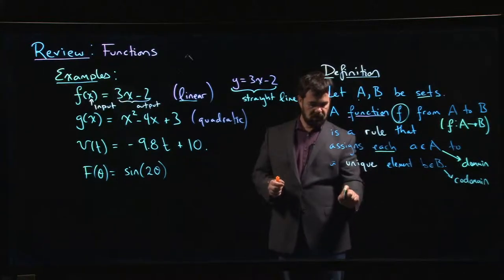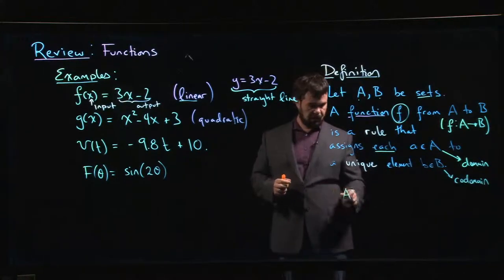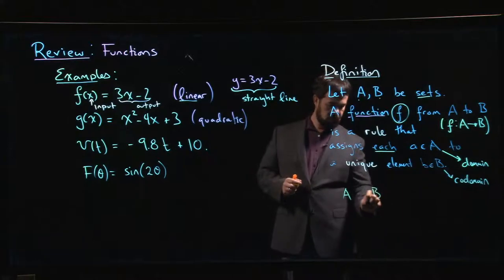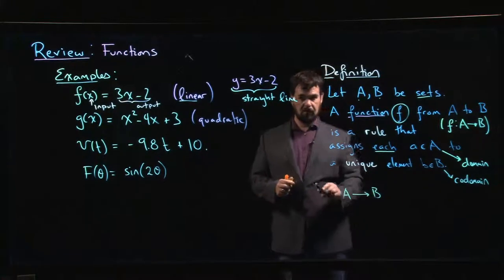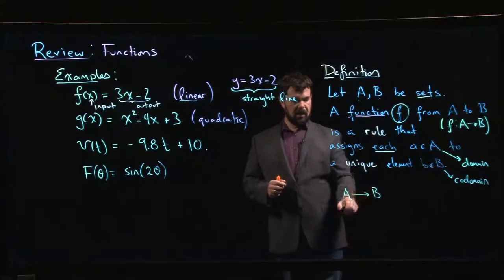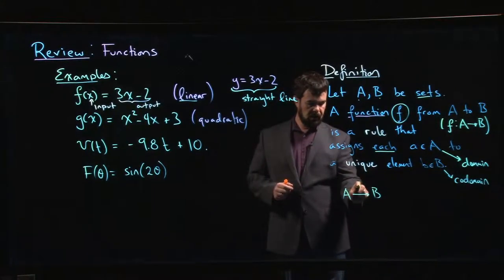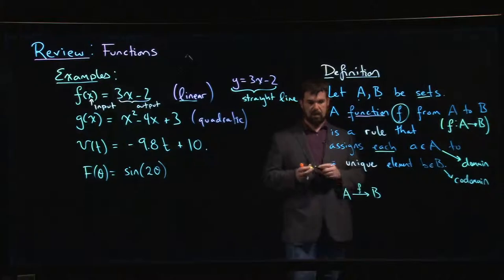Another way that you might represent this function process is you might have a little diagram something like this. Here's my A, here's my B, and then we draw an arrow to represent the fact that things are coming from A and going to B. And if we want to say that F is the rule that's doing that, we can write something like that.